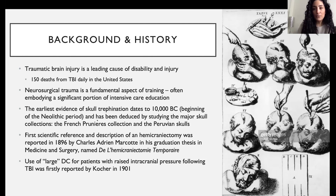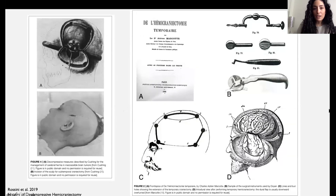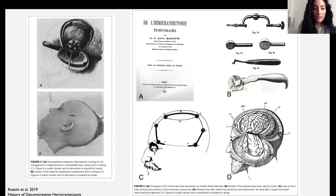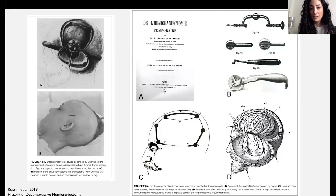The large hemicraniectomy we're familiar with today was described by Coker in 1901, and those of you doing sub-I's should all be familiar with Coker's point. There are some really interesting old photos from a 2019 review paper on the history of decompressive hemicraniectomy that I encourage you to look at - it's an easy read showing old diagrams and instruments. Things have changed, but also kind of haven't.